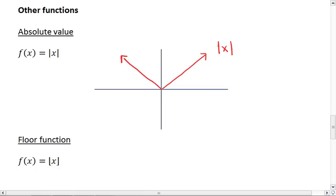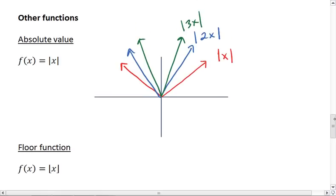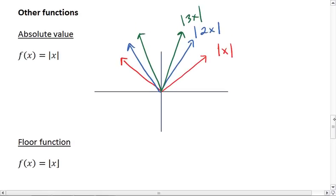If we take the absolute value of 2x, our graph gets skinnier. The absolute value of 3x gets even skinnier. But the red one is the parent function - that's the one you just have to know.